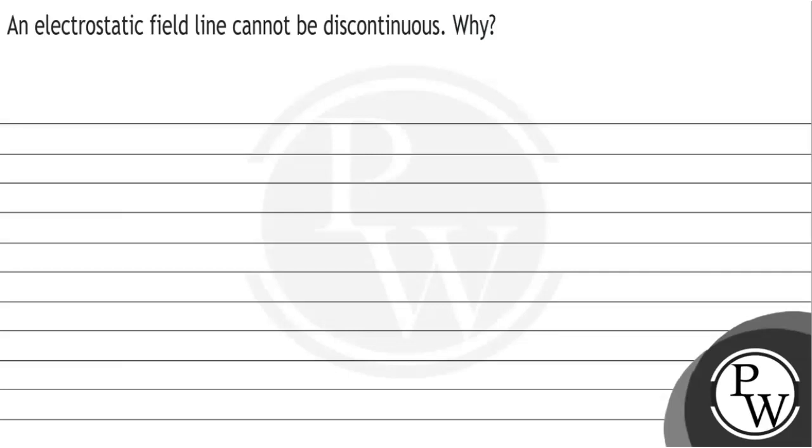Hello, let's see the question. The question is that an electrostatic field line cannot be discontinuous. Why?